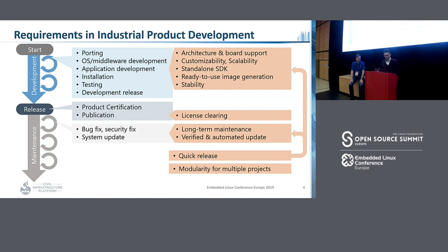After the release, a product goes through a product certification, and then the products will be in the maintenance phase. In this phase, the important thing is that we need to provide many kinds of bug fixes and security fixes if needed, without adding many significant updates to each software installed in the targets. We need to support such things for a long term with verified automated updates, and also need to do this very quickly, and also share the common resources required in multiple products.